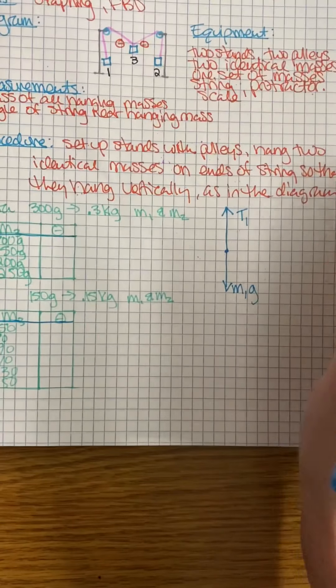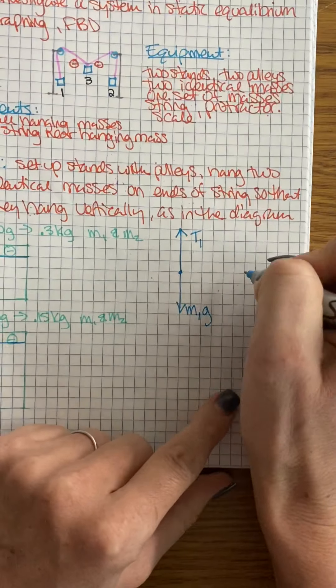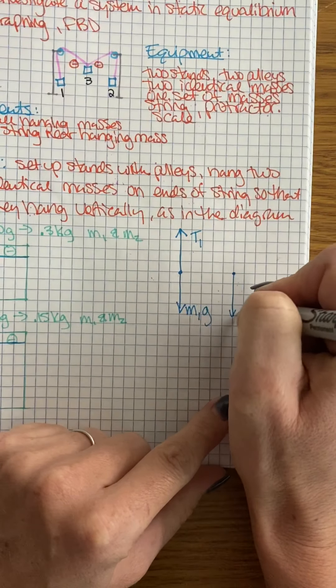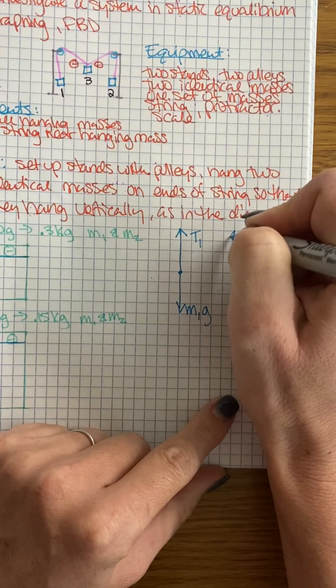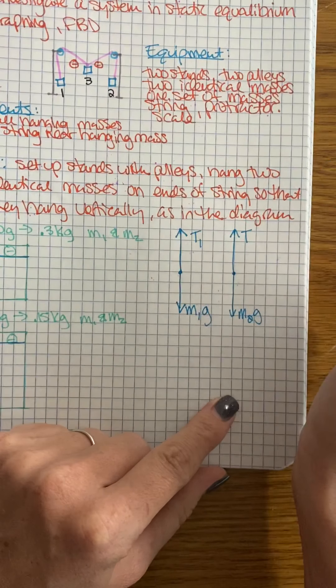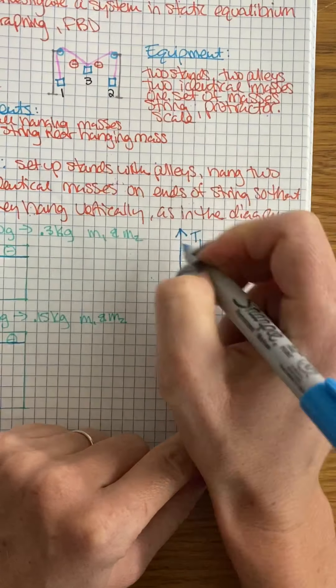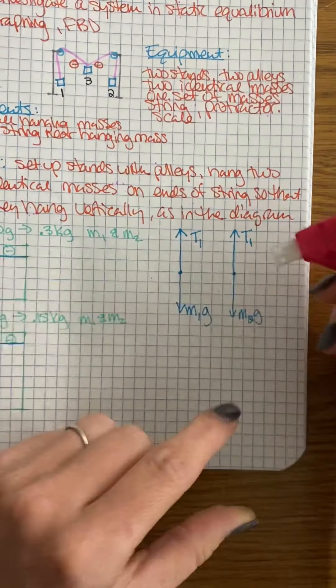Before I started drawing this free body diagram: our M1 and our M2 free body diagrams are going to be the same because they have the same mass, and we just are going to have this one tension. I guess I could leave off the one because there's just going to be one.